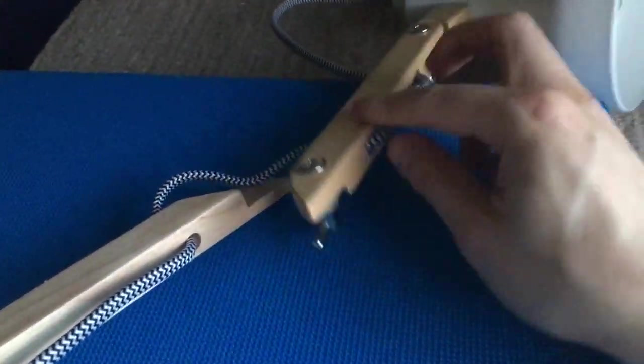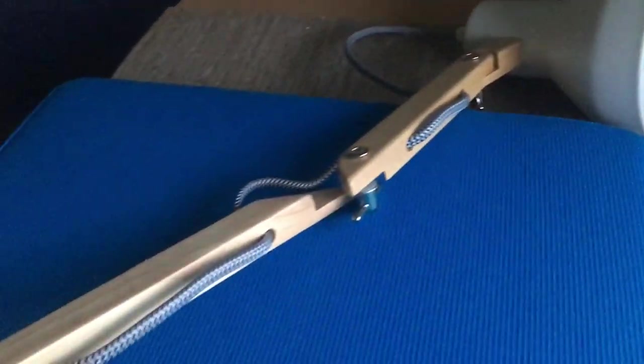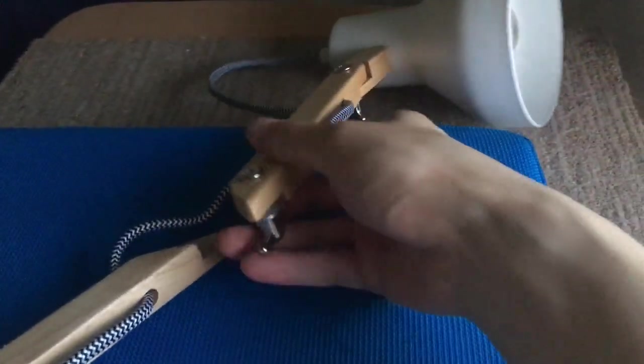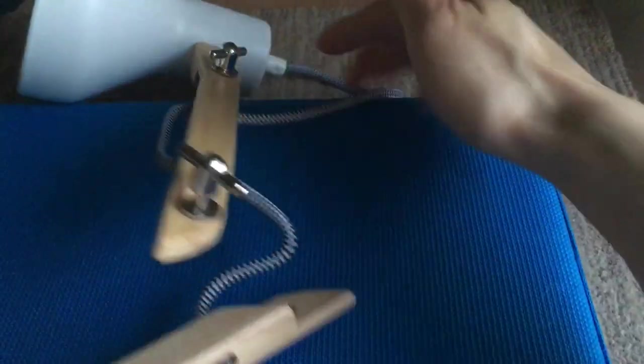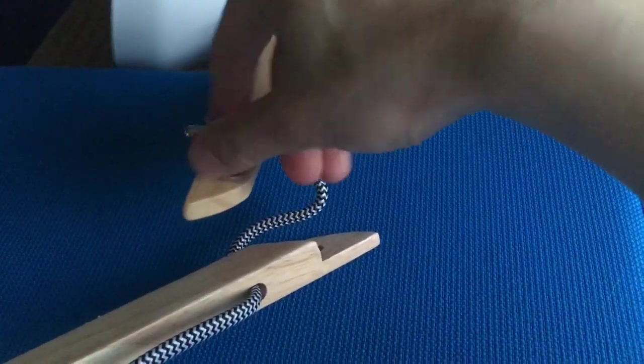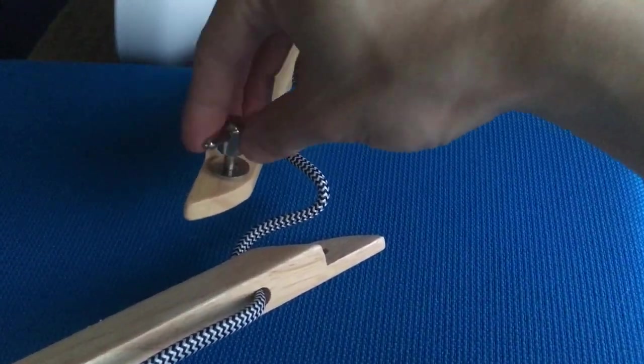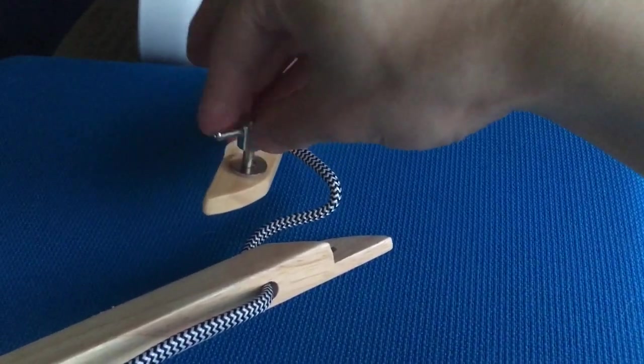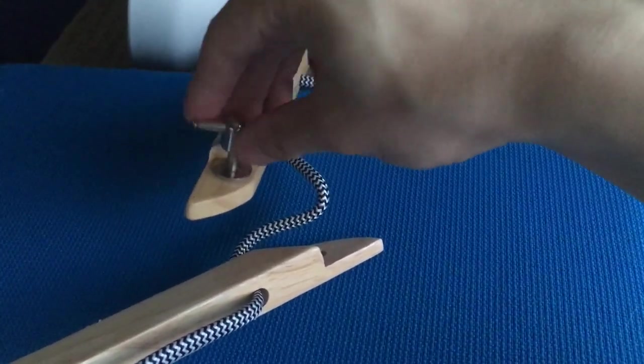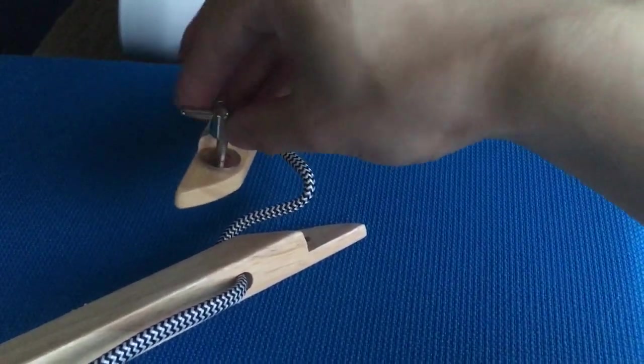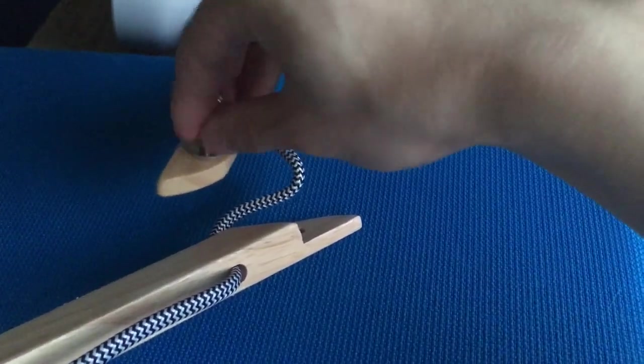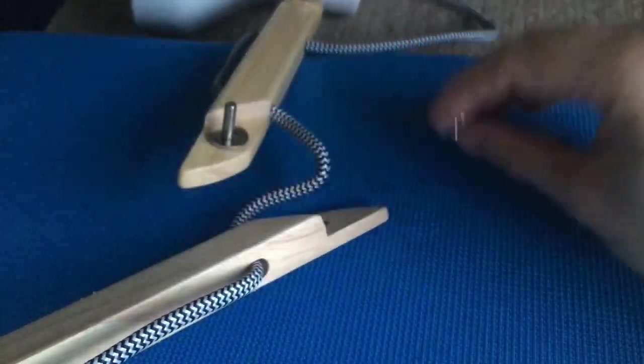So I just want to show you how it's put together. It comes folded down in the box and it has this wire pre-assembled looped through. I just want to show you how it's assembled. It has its own little nut and bolt. It's not really a bolt, it's one of these fasteners.